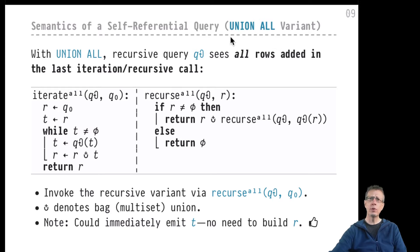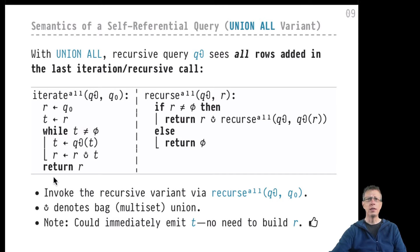So what's the semantic difference if we work with the union ALL variant? Let's look at the operational semantics — the equivalent formulation in terms of either this imperative program or its functional equivalent on the right-hand side. Let's look at the imperative version first. It's now the iterate_all procedure, so that we can tell both apart. The parameters in this procedure — it's a higher-order procedure in a sense — are the recursive and the base case query parts that we are working with.